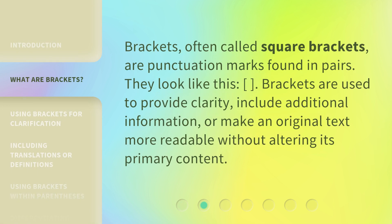Brackets, often called square brackets, are punctuation marks found in pairs. They look like this. Brackets are used to provide clarity, include additional information, or make an original text more readable without altering its primary content.